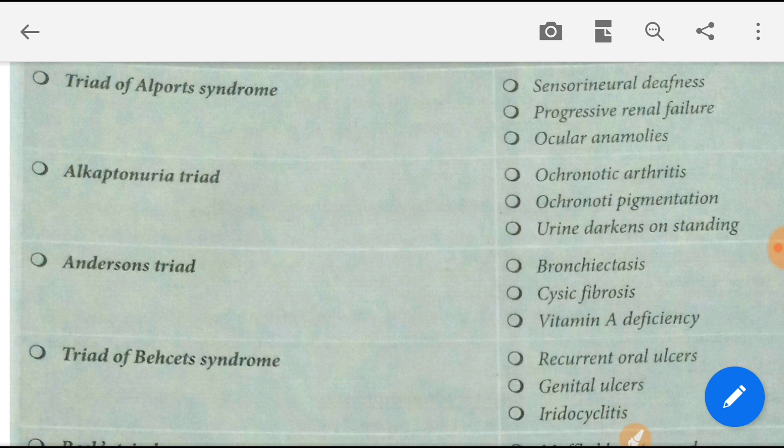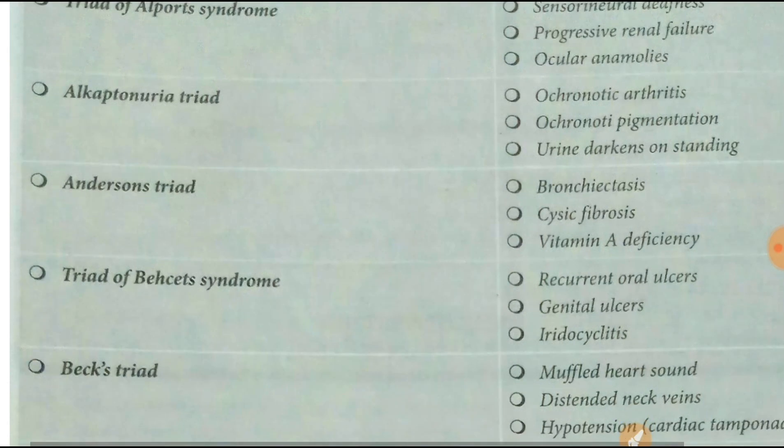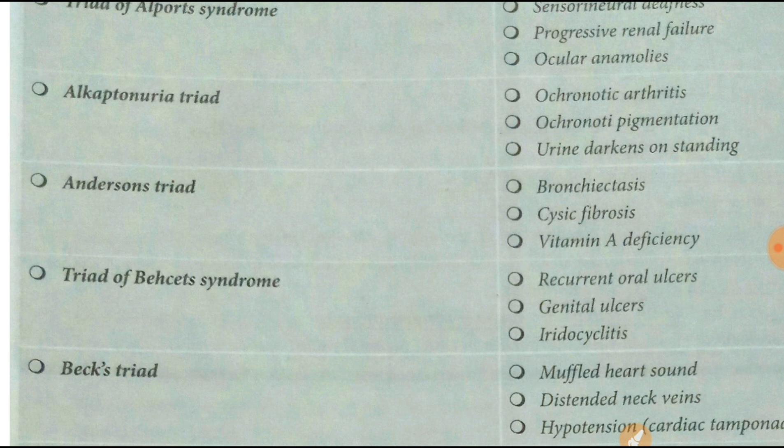Next topic is alkaptonuria. Alkaptonuria means alcaptone formation. It presents with ochronotic arthritis and ochronotic pigmentation — urine is dark on standing.